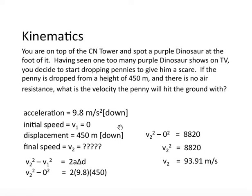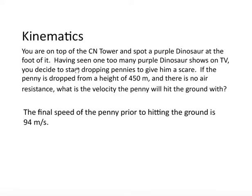When considering significant digits, this is written to two significant digits, this is also written to two significant digits. And technically, when you're dropping something, the definition of dropping something is that the initial speed is zero, which is actually infinite significant digits. So our final answer is 94 meters per second. Every answer needs a concluding sentence: the final speed of the penny prior to hitting the ground is 94 meters per second.